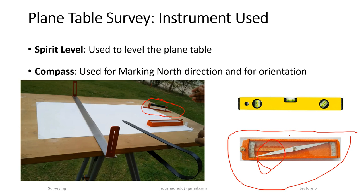The working operations of the plane table are: first, fixing; second, setting; third, leveling; and fourth, orientation. Orientation is carried out throughout the entire survey from start to end. The position is maintained in a fixed direction — this is the process of orientation.